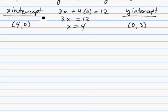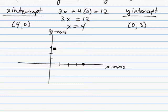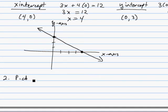The x-intercept is (4, 0). We only need two ordered pairs to graph a line and that's what we have. So as we graph this, the x-intercept at x equals 4 is plotted on the x-axis, and the y-intercept (0, 3) is plotted on the y-axis. We use a solid line because our original inequality has a greater than or equal to. Now we need to pick a test point not on the line.